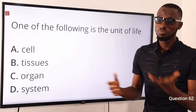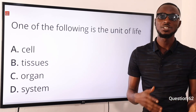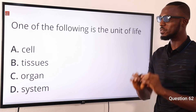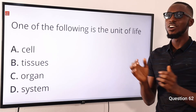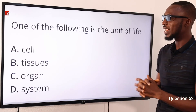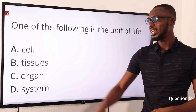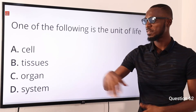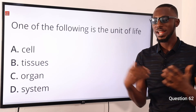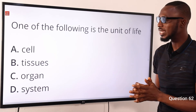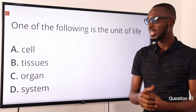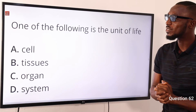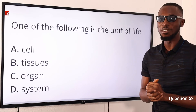Question 62: one of the following is a unit of life — that is the cell. Remember the common definition: a cell is the structural and functional unit of life. When cells come together they form tissues, tissues form organs, organs form systems, and systems make up a multicellular organism. So the correct option is option A for cell.